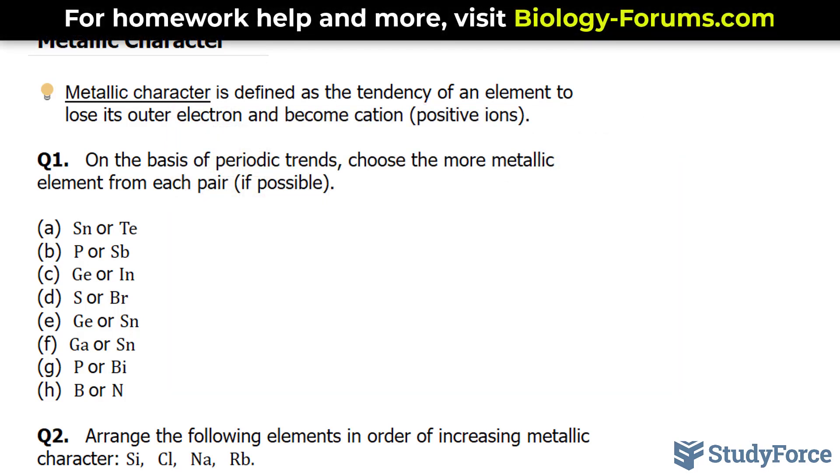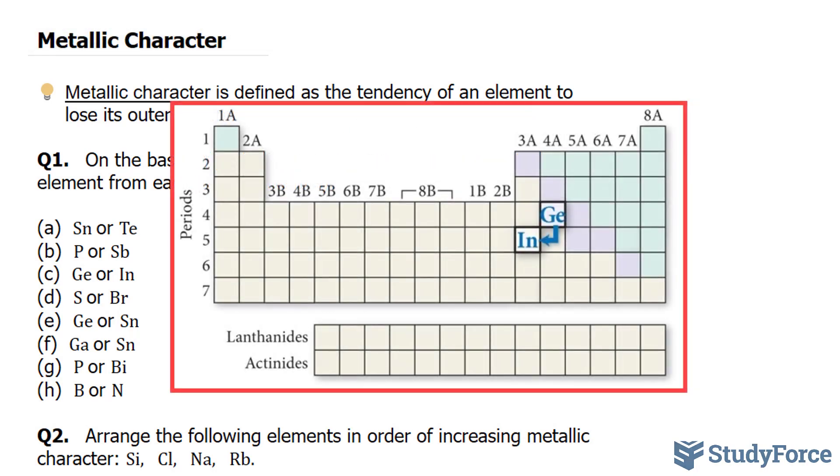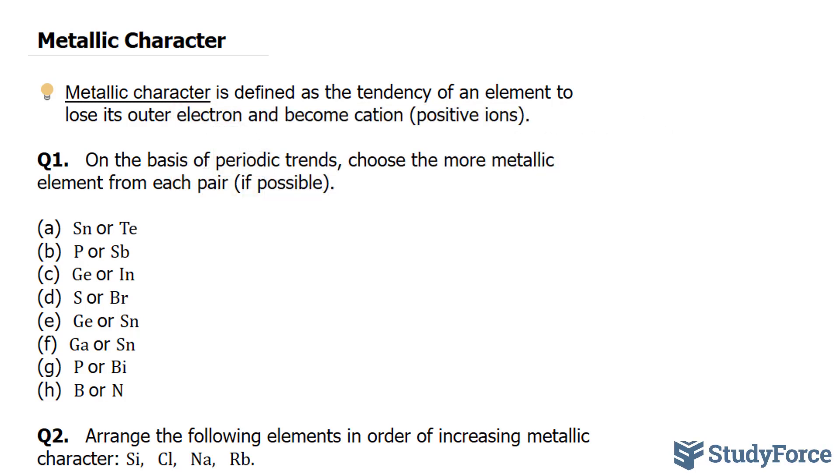Moving on to C, we're comparing germanium and indium. Indium is more metallic than germanium because as you trace the path between them on the periodic table, you move down the column. Metallic character increases as you move down and also to the left. This acts as a synergistic effect, and we can tell right away that indium is the more metallic one of the two.